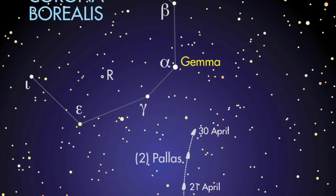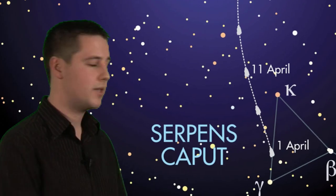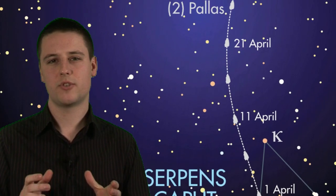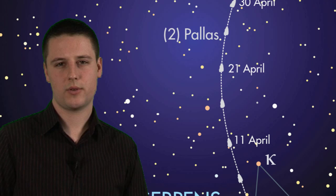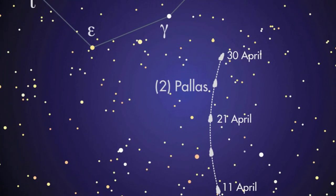There's a good chance this month to see the 550 kilometer wide Asteroid Pallas in our night sky. Now, as this chart shows, it'll be moving against the background stars of the constellation of Serpens Caput over the course of the month.